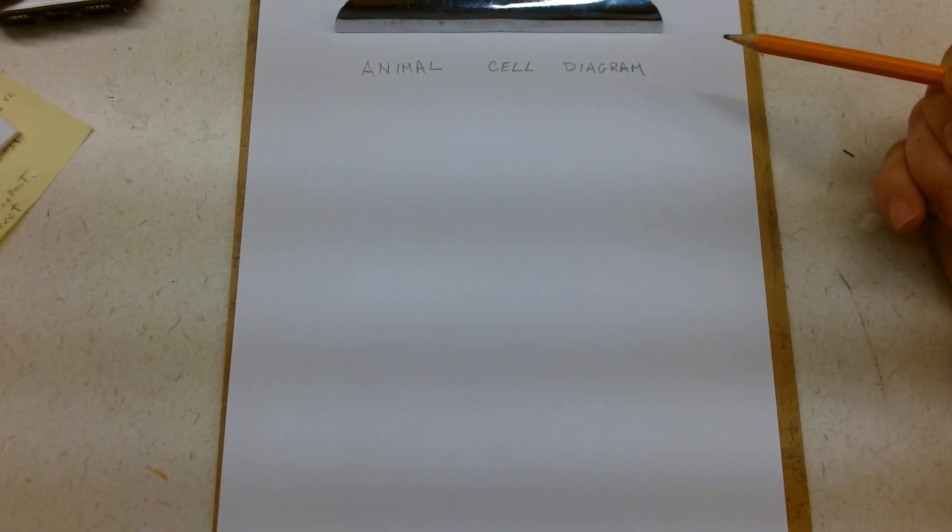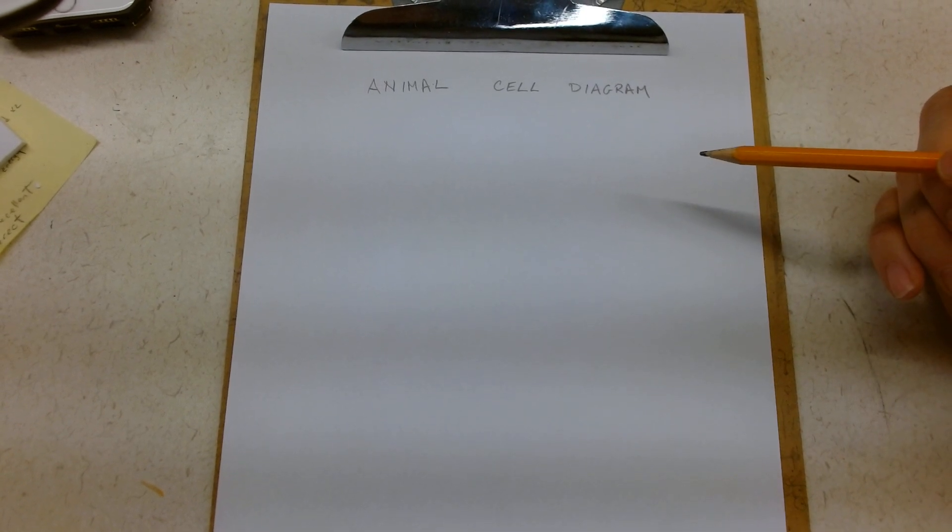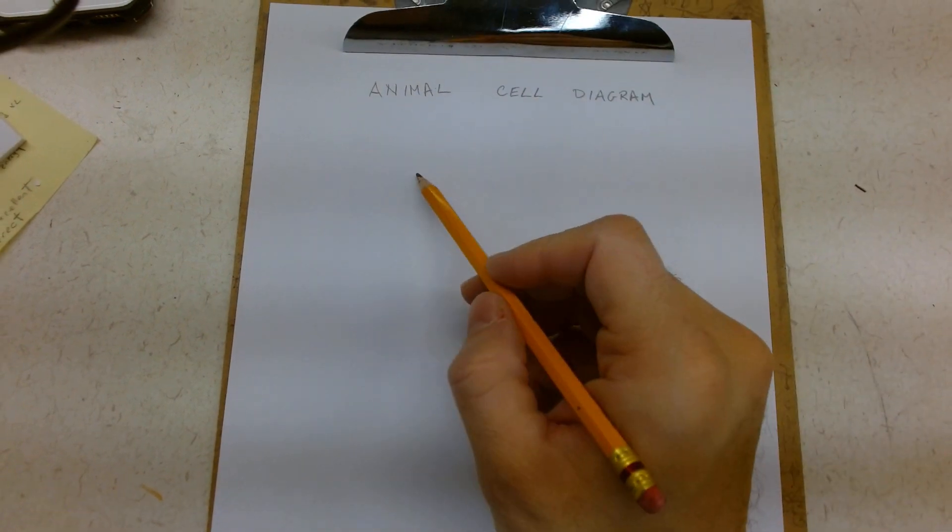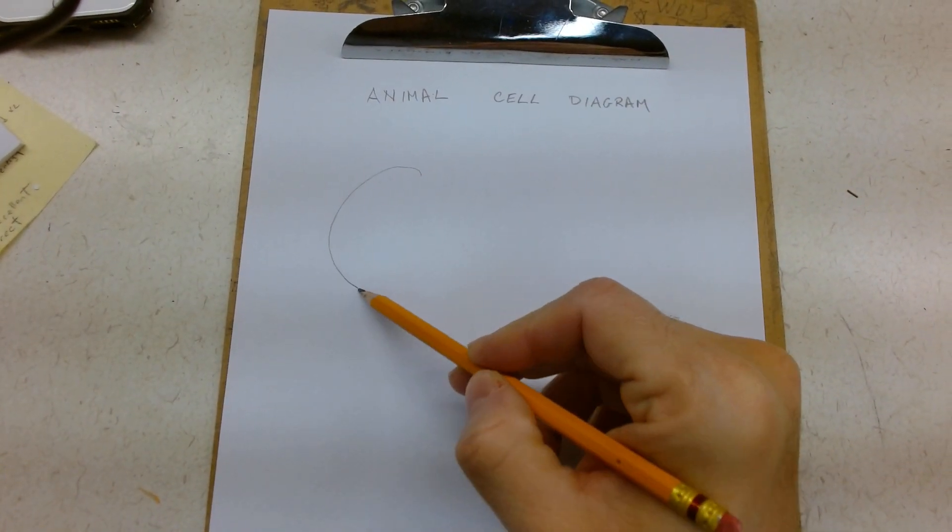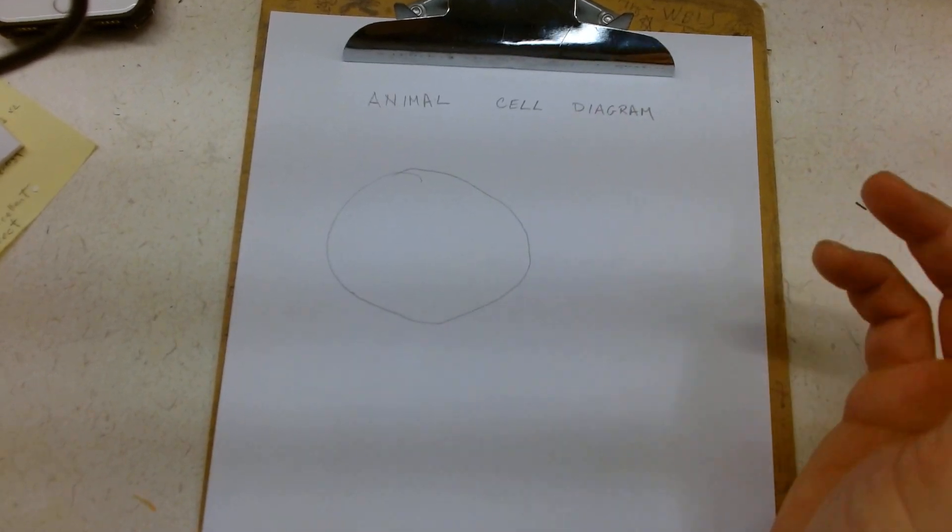All right, class, this is going to be my first attempt at a video to post, so bear with me. We're going to go through the animal cell. There are lots of different types of animal cells. This is a general one that's going to apply universally.